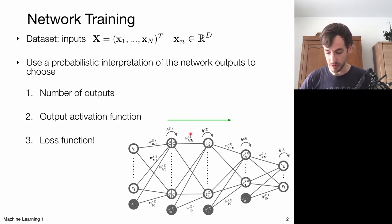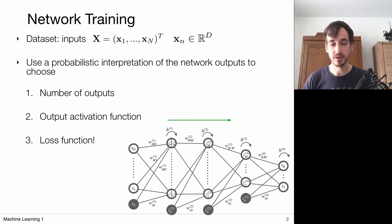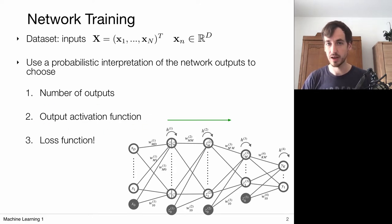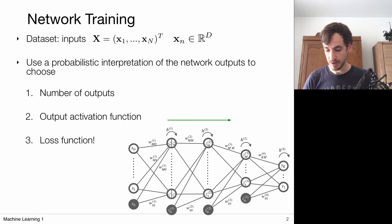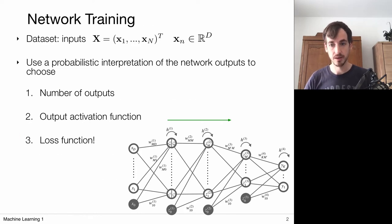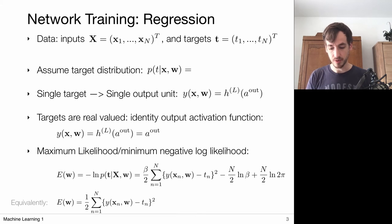We're going to focus on how to find the weights W. The general steps are: define the number of outputs — this is basically given by the problem you're going to solve, whether it's multi-class classification or regression. We also need to define an output activation function. All of this is motivated by what kind of loss function we're going to minimize. We're going to use a probabilistic interpretation of the network outputs to make these decisions, and these choices depend on the problem you're working on.